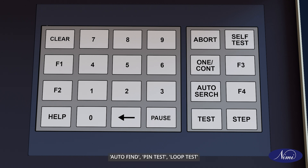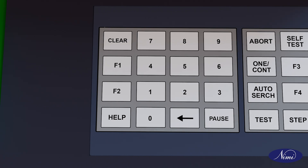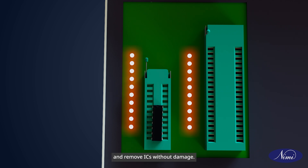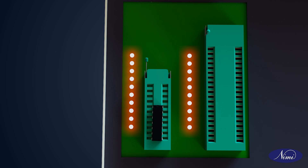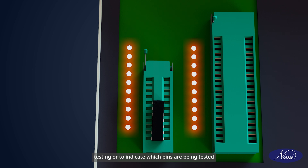Additional command keys include pin test and loop test, which align with common features of IC testers. These keys allow the user to interact with the device, input data, and execute commands. Zero Insertion Force (ZIF) sockets: These are two ZIF sockets with LED indicators, designed to easily insert and remove ICs without damage. The LEDs indicate the status of the pins or the ongoing test, and the sockets are where the ICs are placed for testing. Function indicators: The LED indicators next to the ZIF sockets display the logic levels of the IC pins during testing or indicate which pins are being tested.